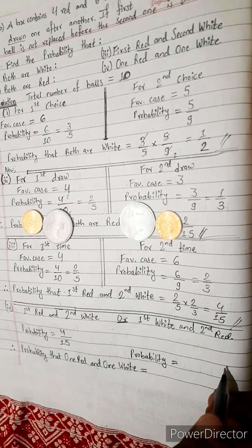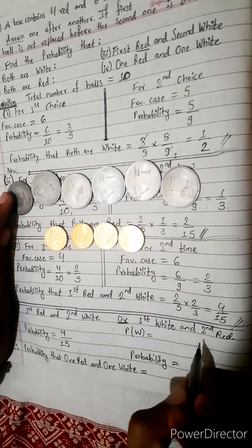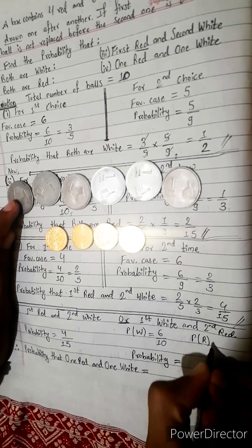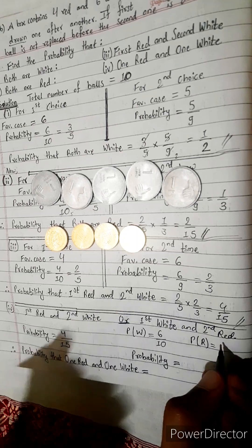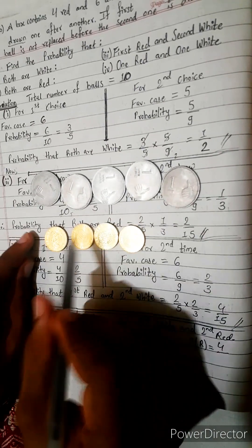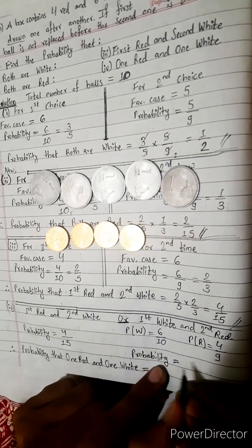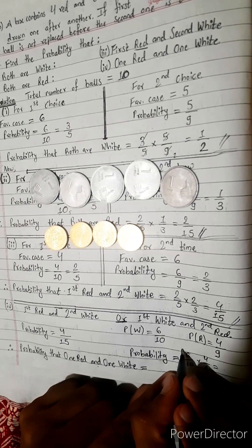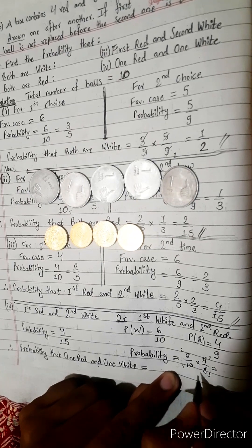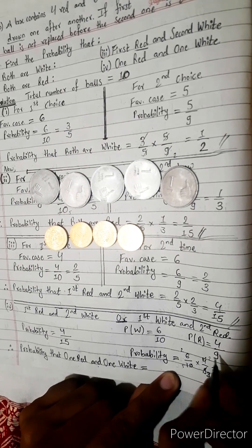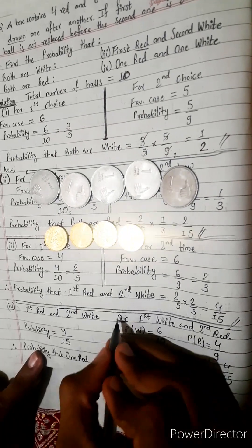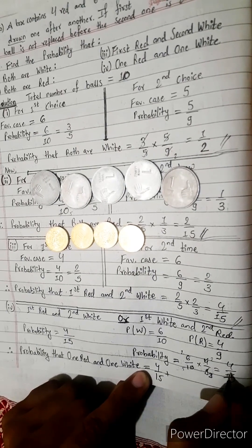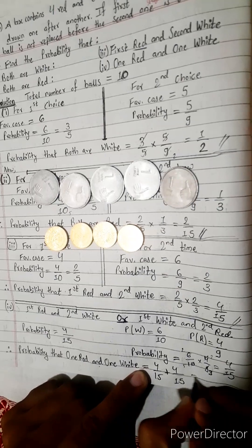For first white and second red: there are six white out of ten, and then four red out of nine remaining. So probability is six by ten multiplied by four by nine. Simplifying: six by ten becomes three by five, and this gives four by fifteen. Therefore, probability of one red and one white equals four by fifteen plus four by fifteen, which equals eight by fifteen.